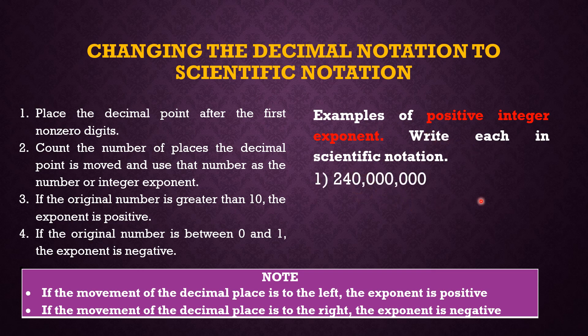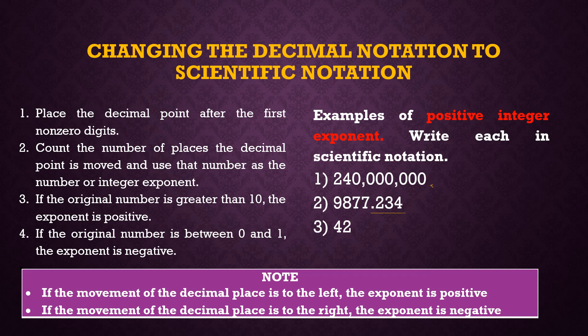Here is an example: 240 million. This is obviously greater than 10, so our exponent will be positive. Another example: 9,877.234. This is also greater than 10, so it will also have a positive integer exponent. Number 42 is likewise greater than 10, so it too will have a positive exponent.